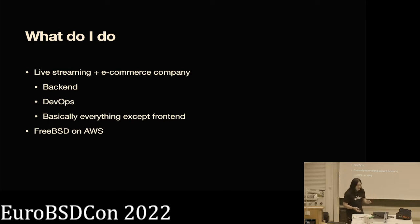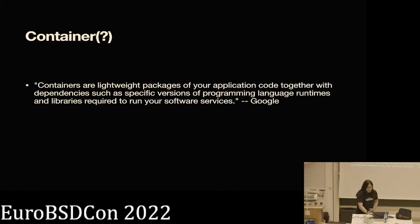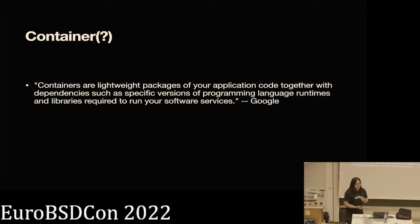We're pretty happy and just designed our auto-scaling setup. I love DTrace so much — that's why we stick with FreeBSD. But at some point when you start to have more services and CI/CD pipelines, it becomes quite important and somewhat painful. So how are we going to accelerate the CI/CD process?